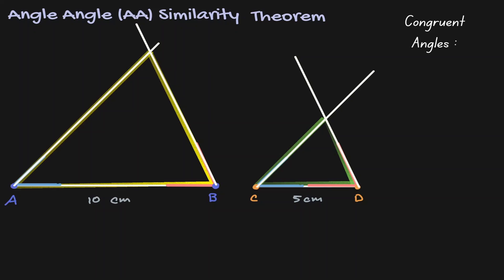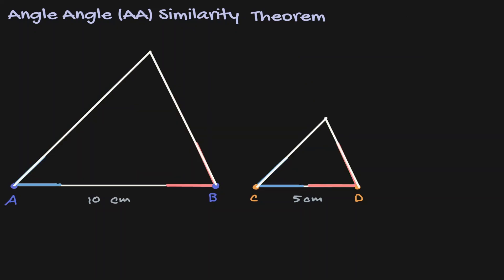Now let's clean this up a little bit. Is there any relationship between these two triangles? Well, by design all interior angles are congruent. Angle A is congruent to angle C — we started by saying that the blue angles were congruent to each other. Angle B is congruent to angle D — we started by saying that the red angles were congruent to each other. And because all interior angles in any triangle are equivalent to 180 degrees, the third angle is also congruent among both triangles.